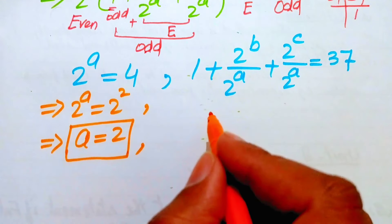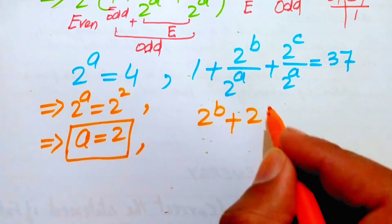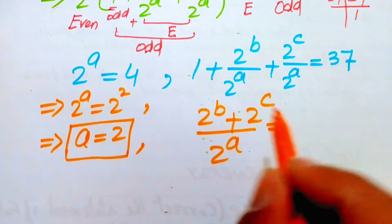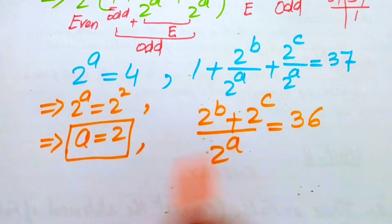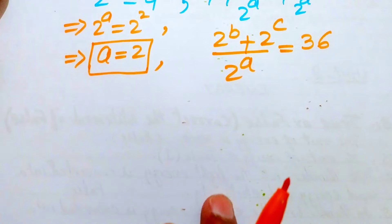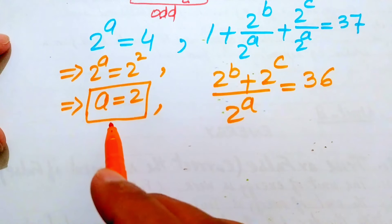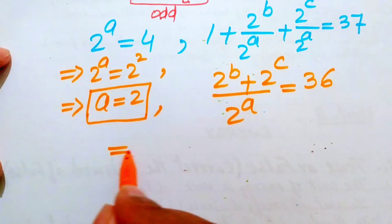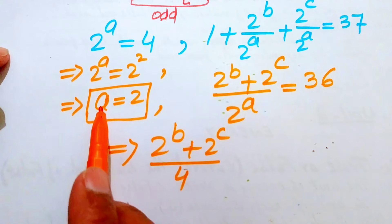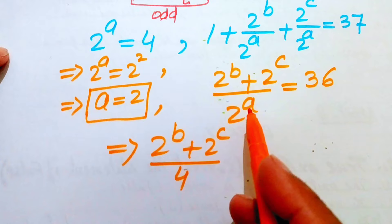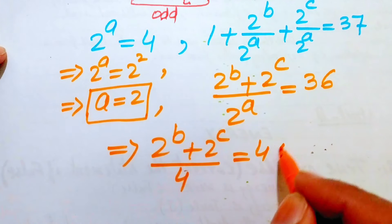Now we move to the second case. We move the 1 to the right-hand side and take common denominator, giving us 2^b plus 2^c over 2^a equals 37 minus 1, which is 36. We substitute a equals 2, so the denominator is 2^2 equals 4, giving us 2^b plus 2^c over 4 equals 36, and the right-hand side becomes 4 times 9.